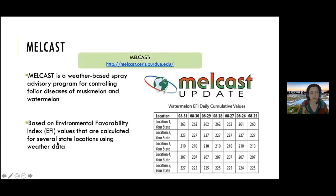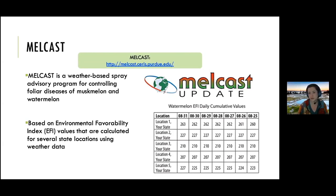Now I'll briefly tell you about MELCAST, something we evaluated in collaboration with a couple of states. MELCAST is a forecasting tool for watermelon and melon growers — it gives you an environmental favorability index for disease and tells you when to spray. In other states, folks using MELCAST have reported saving two to three sprays without losing any fungicide efficacy. It's hosted by Purdue by Dr. Dan Egel.